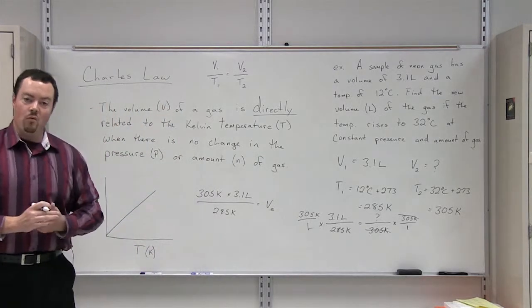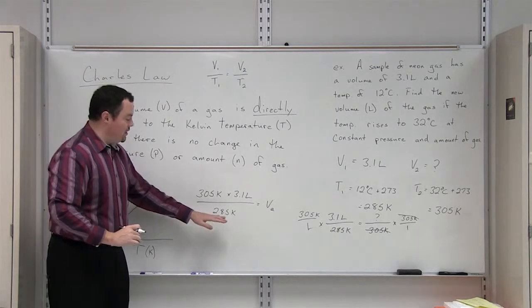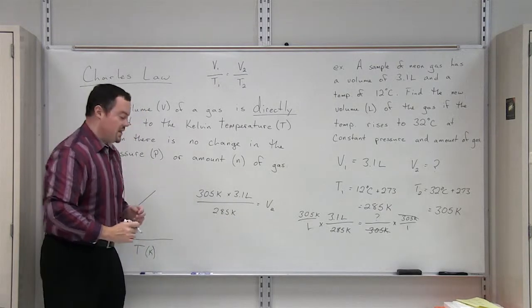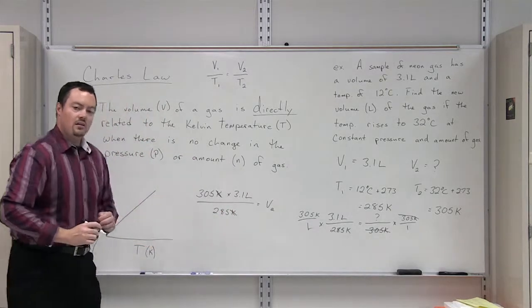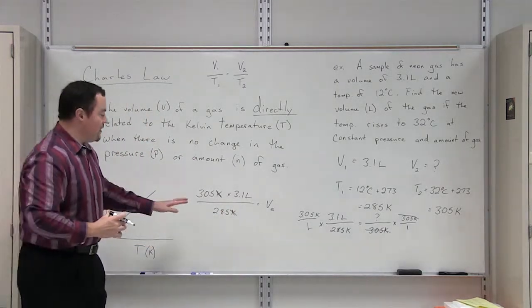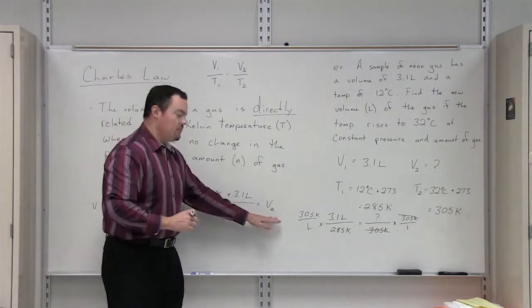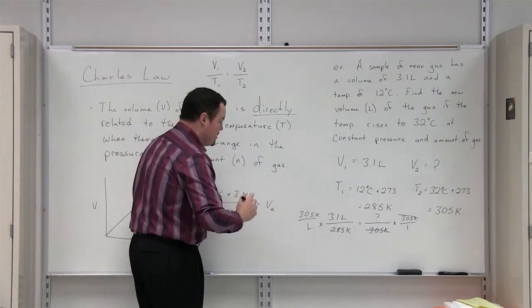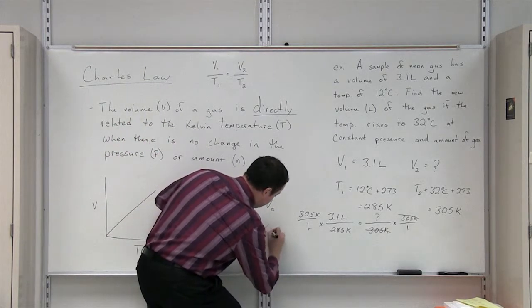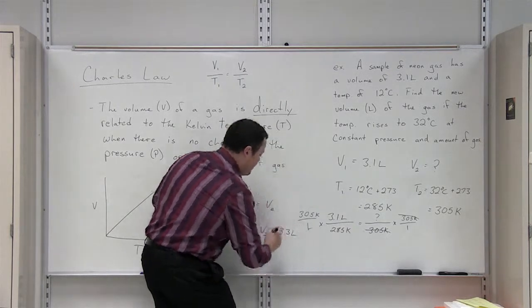The way that you can check your work and make sure that you're correct is by looking at the units and which units cancel out. You see here that we have Kelvin on top and on the denominator, which would mean that they would cancel out. The only unit we're left with is liters, and volume is measured in liters. Whenever you calculate this value out, you see that V2 is going to be equal to 3.3 liters.